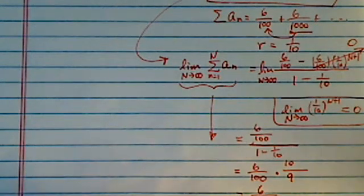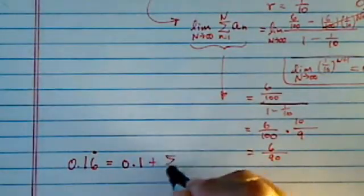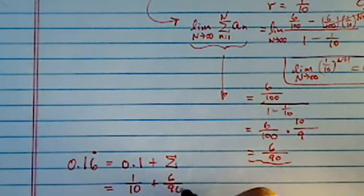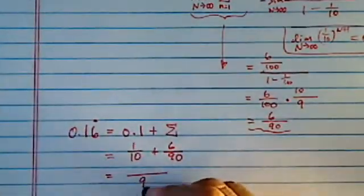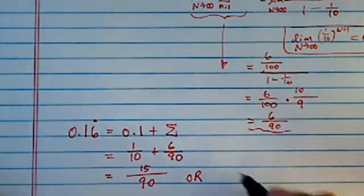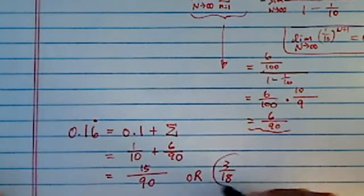Okay, so now from the top, we have 0.16 repeating is equal to 0.1 plus this big summation, which we just found equal to 6 over 90. So this is 1 over 10 plus 6 over 90, and this is pretty easy. So it's 15 over 90, which simplifies to 3 over 18.